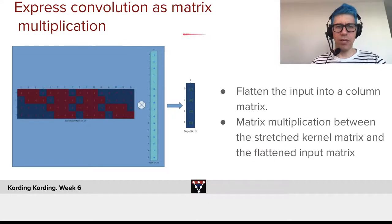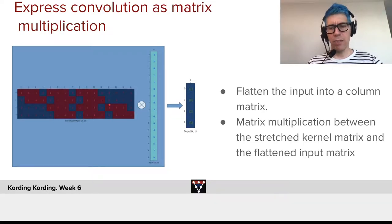Now we can express convolution as a matrix multiplication. We take this stretched out kernel, we take that flattened input, we flatten input into call matrix, and we just have a regular matrix multiplication between these two. And for such a matrix multiplication, of course, the gradients are perfectly well defined.